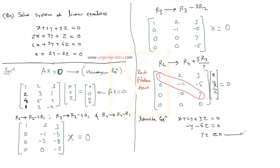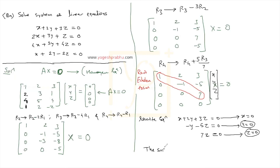From the third equation, 7z equals 0 implies z equals 0. Substituting z equals 0 into the second equation gives y equals 0. Substituting both y and z equal to 0 into the first equation gives x equals 0. So the solution is x equals 0, y equals 0, z equals 0.